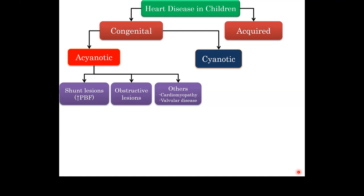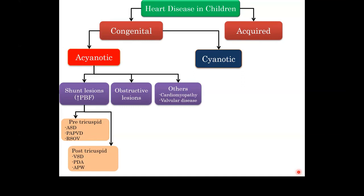Shunt lesions can be divided into pre-tricuspid valve shunts — such as ASD or partial anomalous pulmonary venous drainage — or post-tricuspid shunts such as VSD, PDA, or aortopulmonary window. All these cause increased pulmonary blood flow. These babies won't be blue because the shunt is always left to right, so oxygenated blood goes into the deoxygenated side.